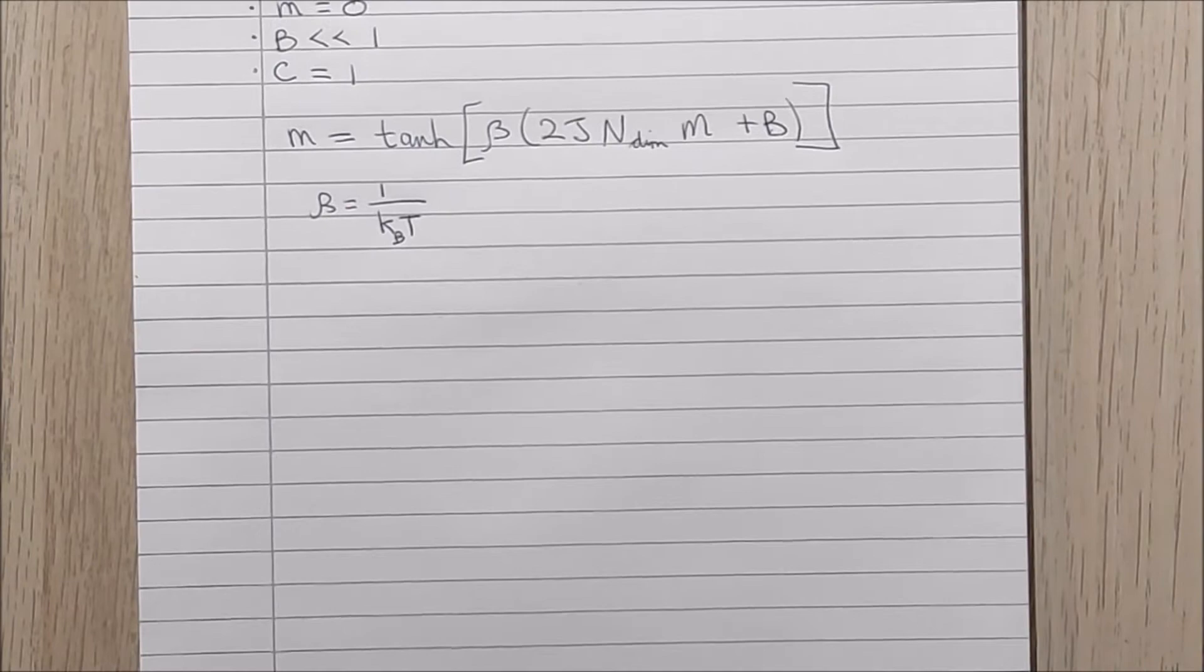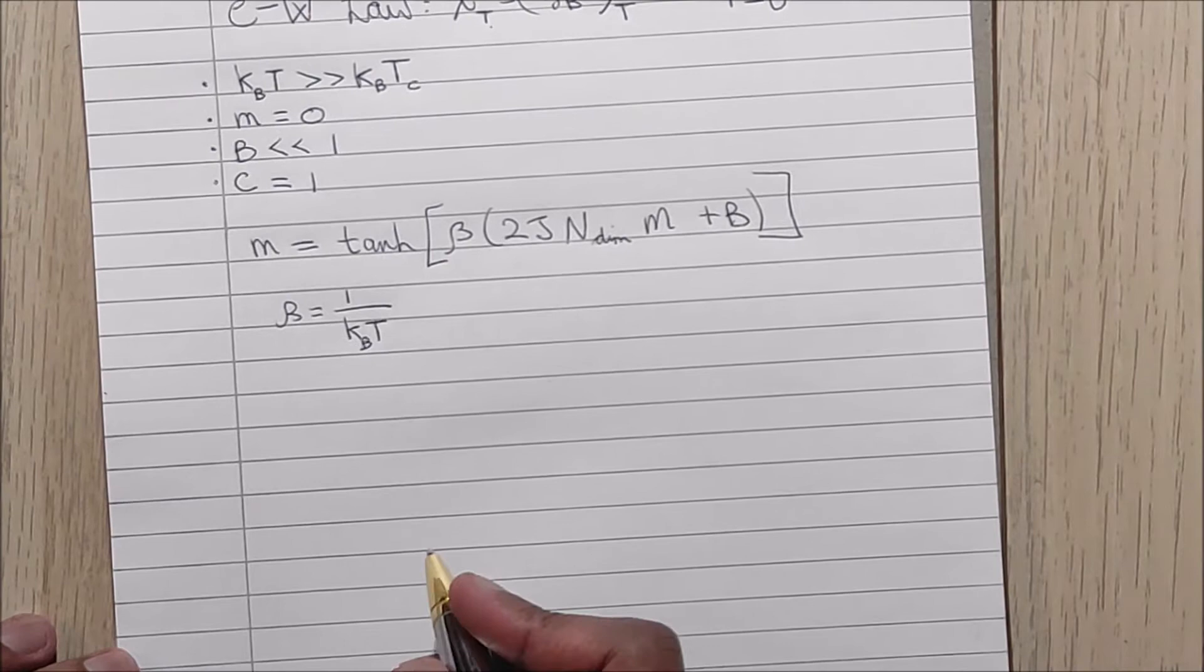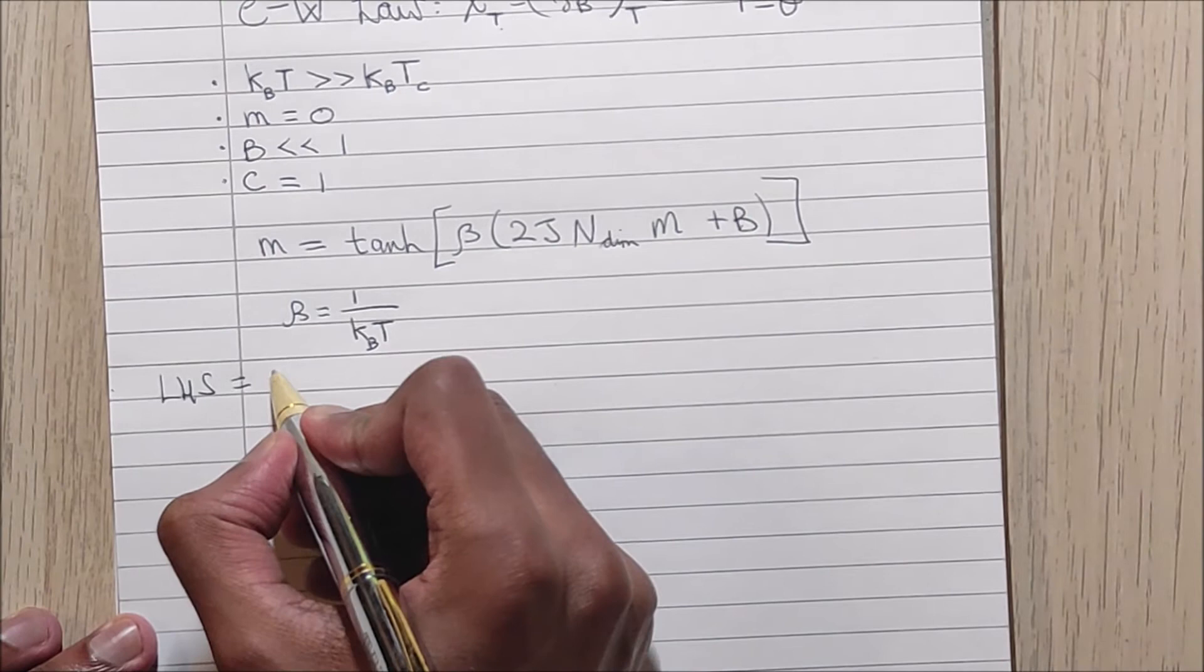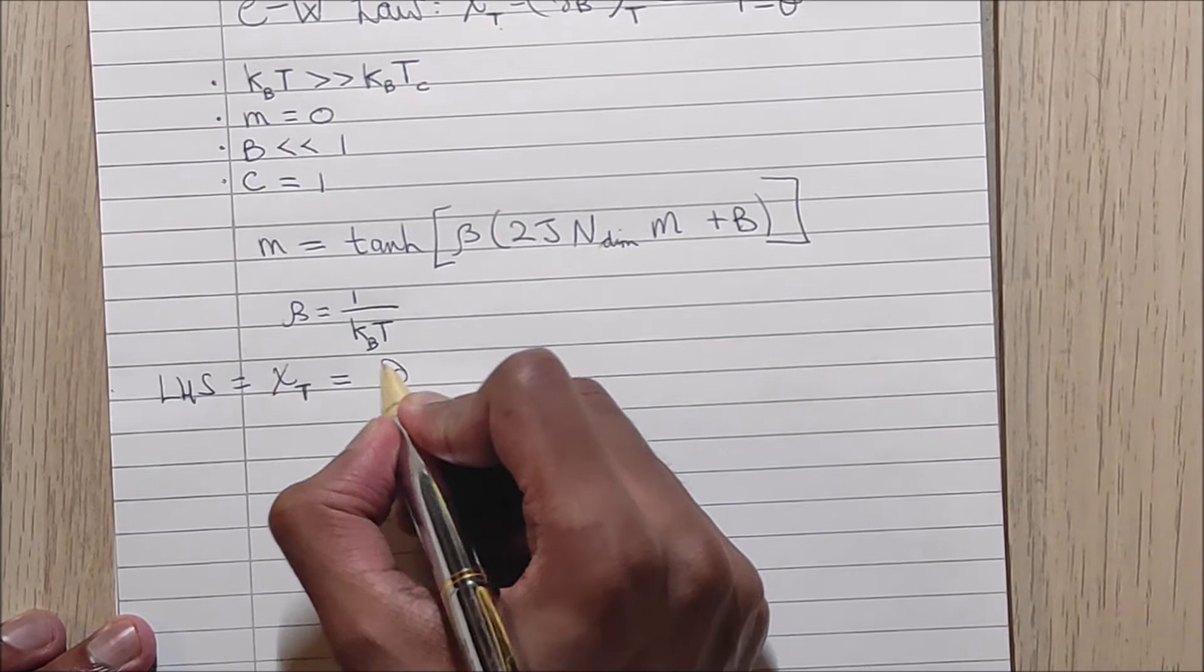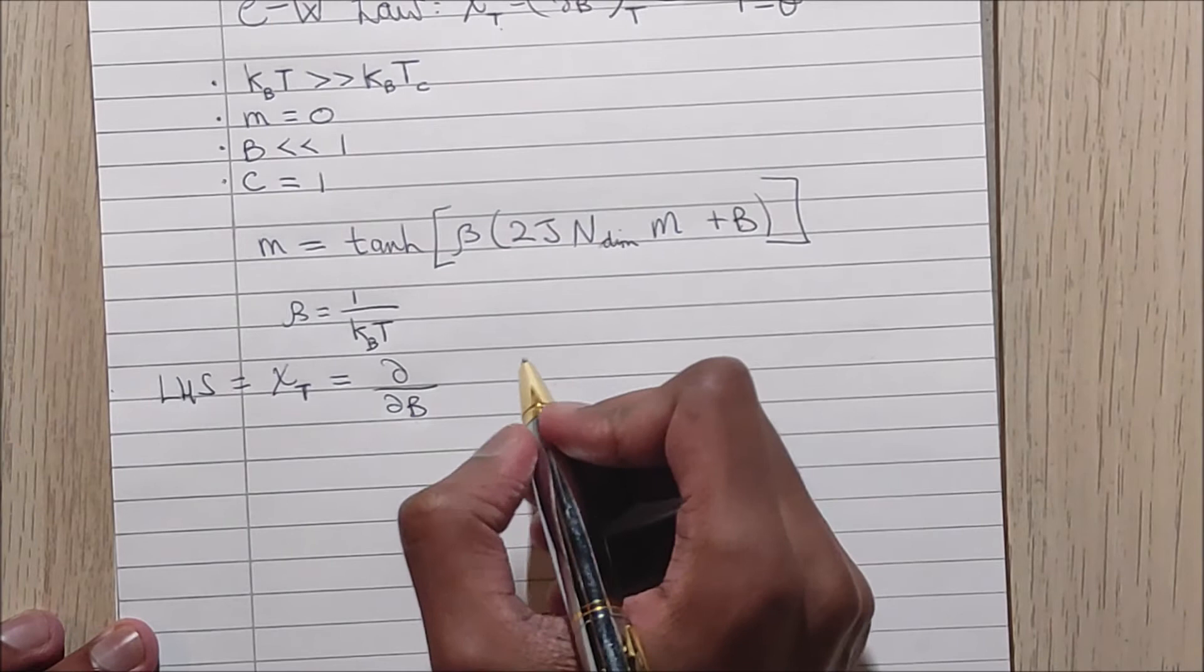So now I will substitute this expression for M into the Curie-Weiss law. We have the left-hand side of the equation being the magnetic susceptibility equal to the partial derivative with respect to B of this expression for the average magnetization.